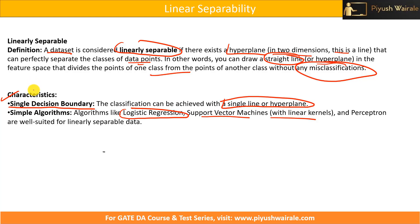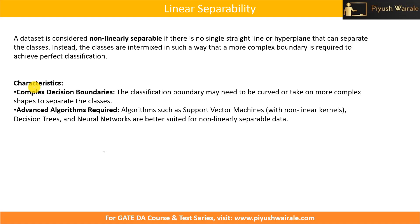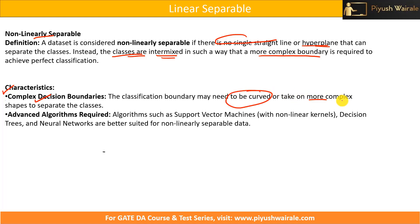For non-linearly separable data, there is no straight line or hyperplane that can separate the classes. Instead, the classes are intermixed in such a way that a more complex boundary is required. The decision boundary can be a curve or take on more complex shapes. Advanced algorithms such as support vector machines with nonlinear kernels, decision trees, or neural networks are better suited for non-linearly separable data.